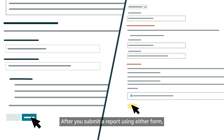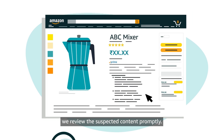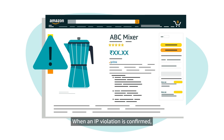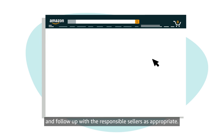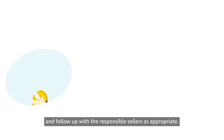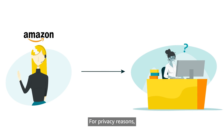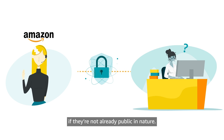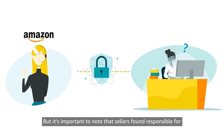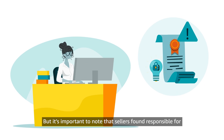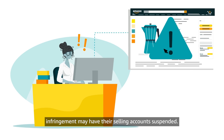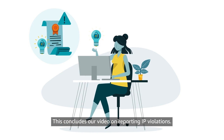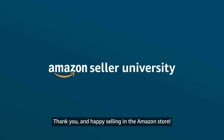After you submit a report using either form, we review the suspected content promptly. When an IP violation is confirmed, we remove the content from the Amazon store and follow up with the responsible sellers as appropriate. For privacy reasons, we don't share details about our follow-up with sellers if they're not already public in nature. But it's important to note that sellers found responsible for infringement may have their selling account suspended. This concludes our video on reporting IP violations. Thank you and happy selling in the Amazon store.